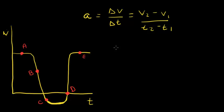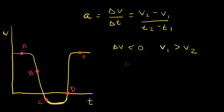Let's define what the change in velocity means in terms of acceleration. If the change in velocity is less than zero, or negative, then the initial velocity is greater than the final velocity — for example, going from five meters per second to one meter per second, or from negative two meters per second to negative six meters per second. It doesn't matter whether the values of velocity are negative or positive; what matters is the change. When the change in velocity is less than zero, our acceleration will be negative.